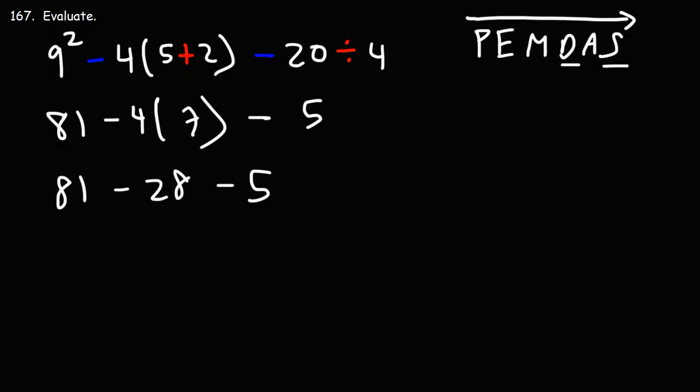Now, let's use a calculator. 81 minus 28 is 53. 53 minus 5 is 48. So 48 is the final answer.